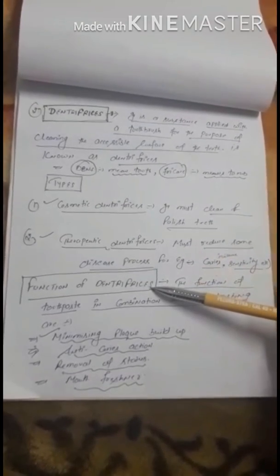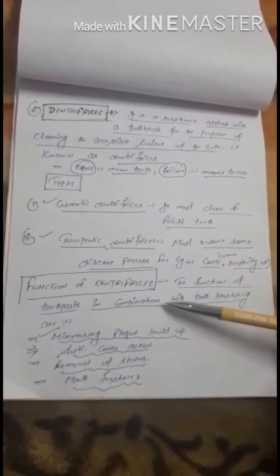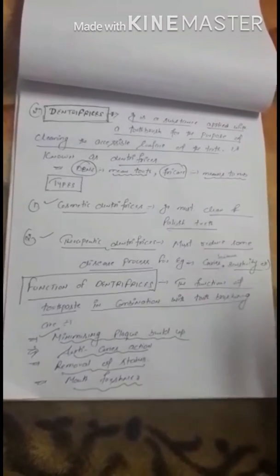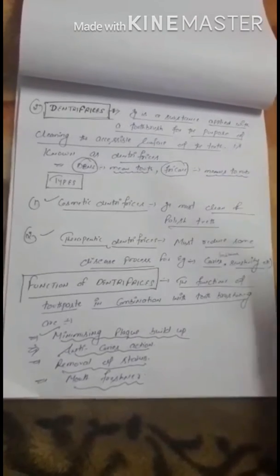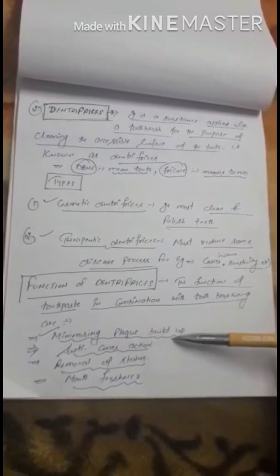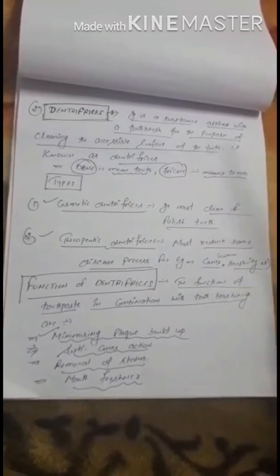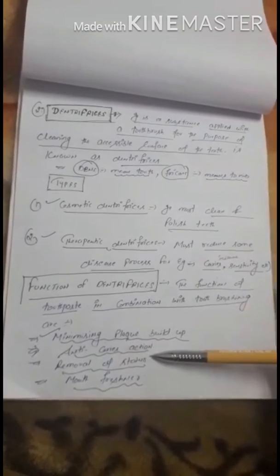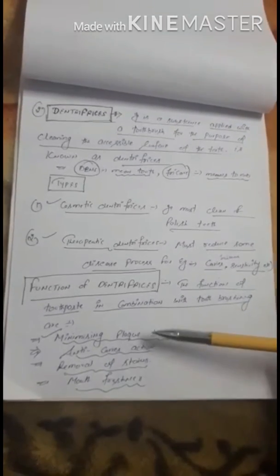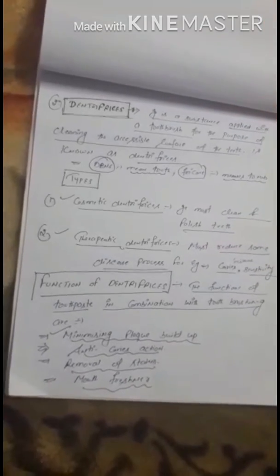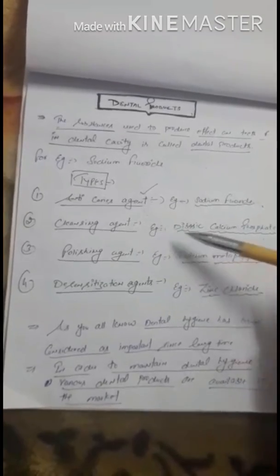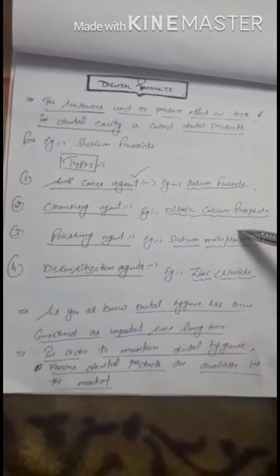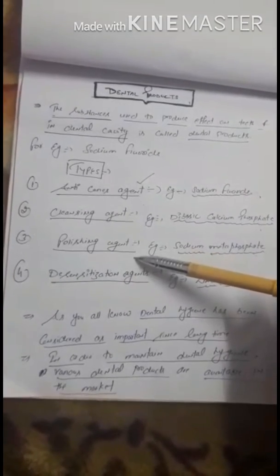Now moving to the functions of dentifrice — what are the various functions of dentifrice? The functions of toothpaste in combination with tooth brushing are: first, minimizing plaque build-up; second, anti-caries action to prevent tooth decay; third, removal of stains; and lastly, bringing freshness to the mouth. Example: dibasic calcium phosphate.